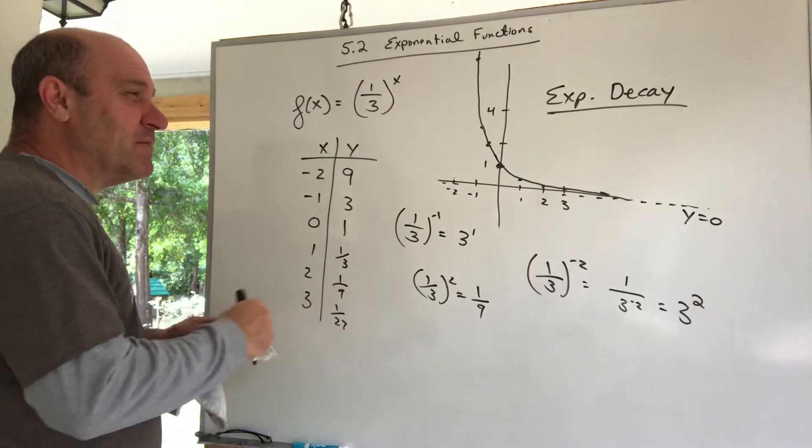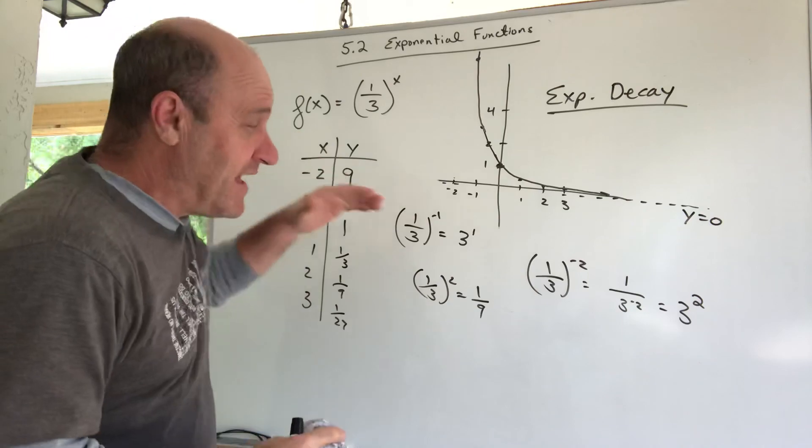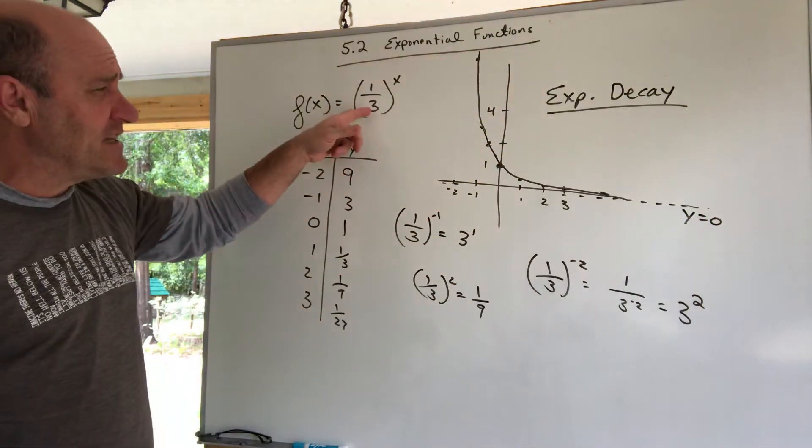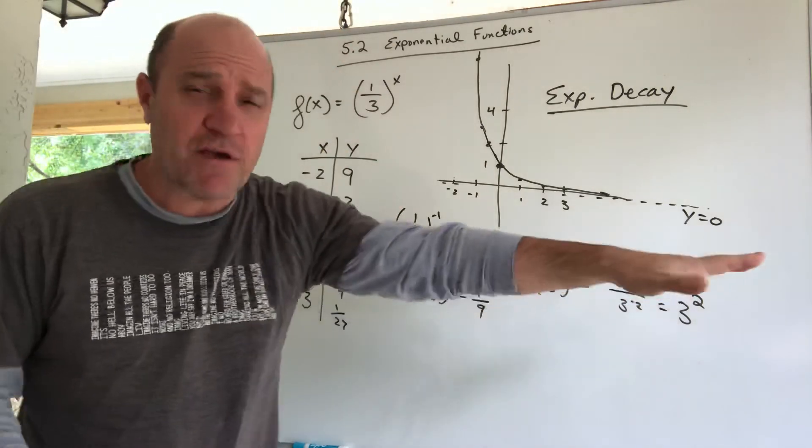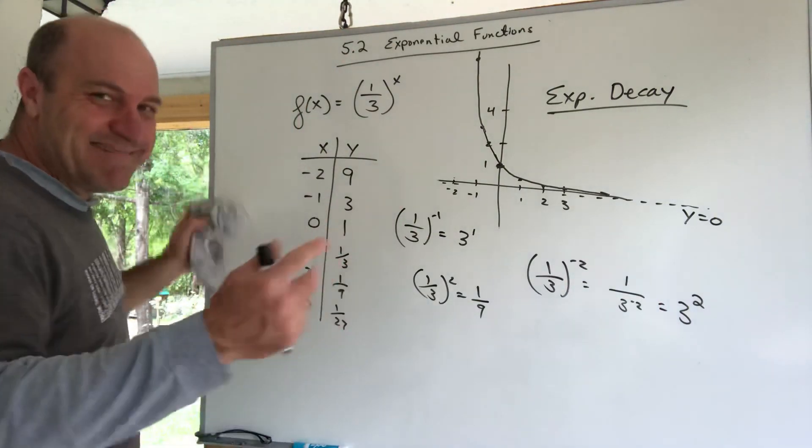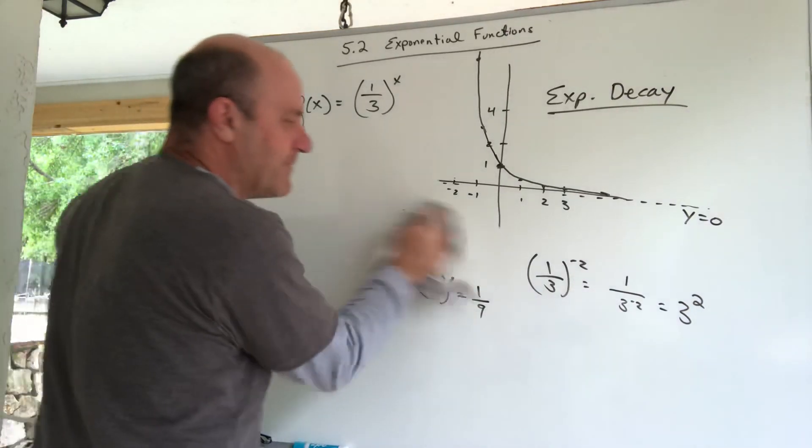They come in various forms. One thing you might've just learned is if the base is bigger than one, that's growth because you're multiplying by something bigger than one. If the base is less than one, it's decay because you're multiplying by something less than one, it's going to decrease. But there's this little twist. Let me show you a different way to decay.